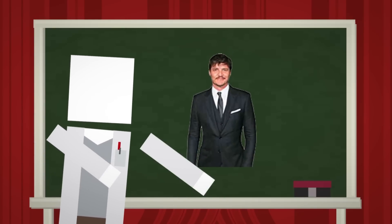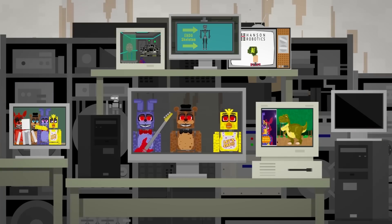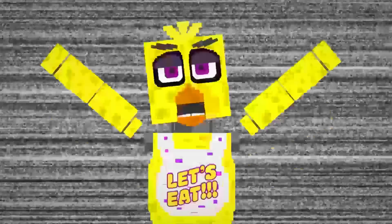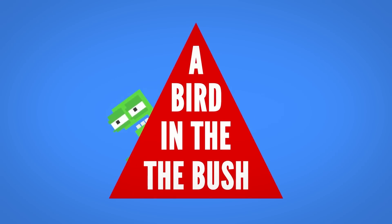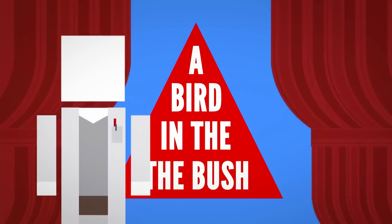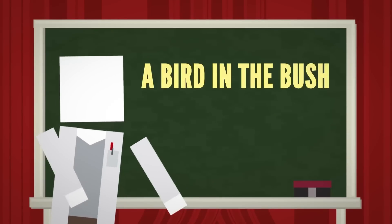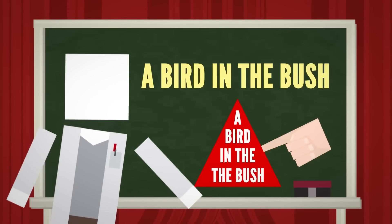But this doesn't only happen when there is a lot of visual input. It also occurs when your brain is expecting to see something. Look at this for example. Don't worry, we won't hide anything in the background this time. So go ahead and read this. What does it say? Did you read it as a bird in the bush? Then your brain completely missed the extra the.